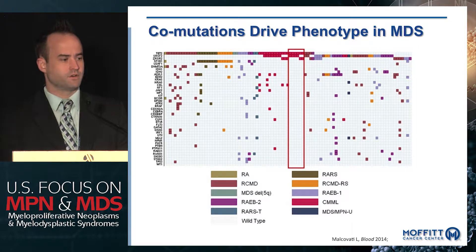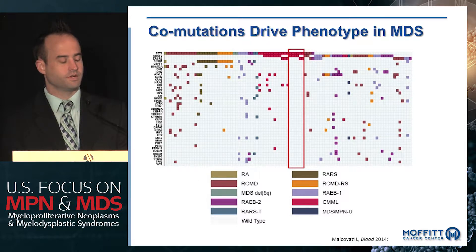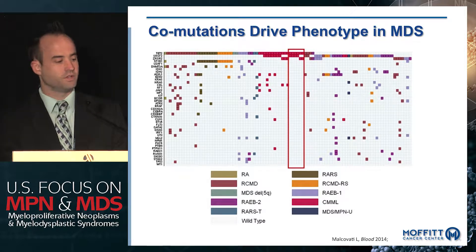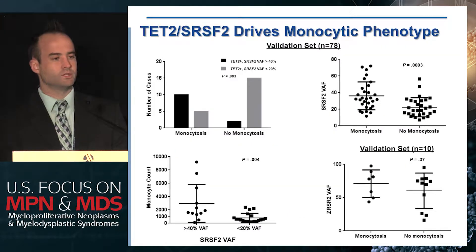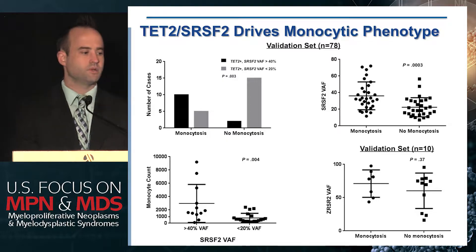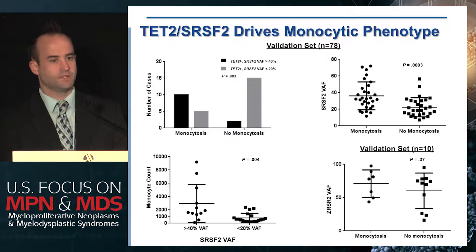Co-mutations also matter for genotype-phenotype correlations. One study showed that co-mutation of TET2 with either SRSF2 or ZRSR2 was 97% concordant with the presence of monocytosis, and several of the patients without CMML developed overt CMML during follow-up. When looking at allele burden, a higher VAF of SRSF2 predicts for monocytosis greater than one thousand, with the median VAF being significantly higher in patients with monocytosis.